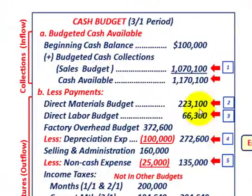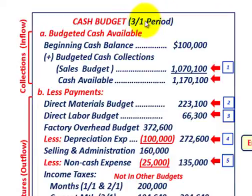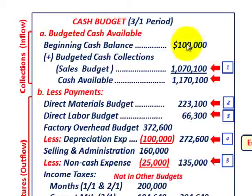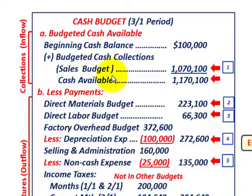Now let's walk through an example using numbers from previous budget videos, looking at just the month of March. For step one — budgeted cash available — we start with a beginning cash balance of $100,000, then add budgeted cash collections of $1,070,100 from our sales budget, giving us total cash available of $1,170,100.